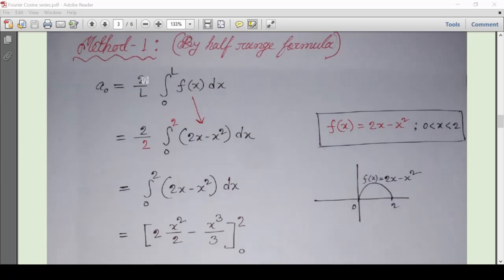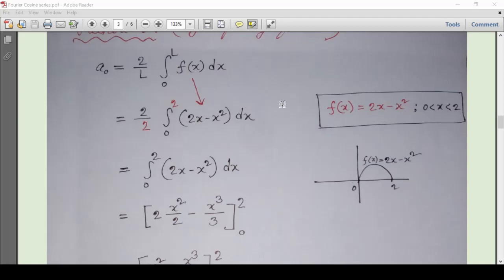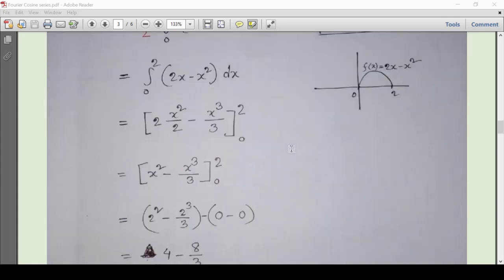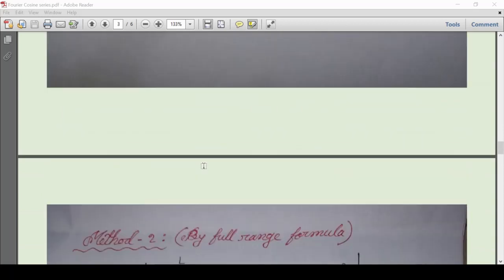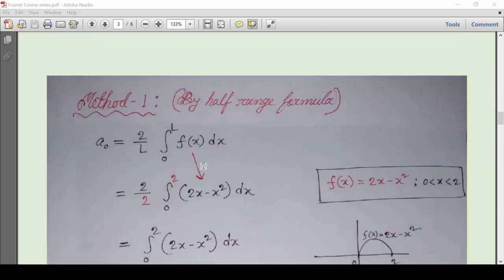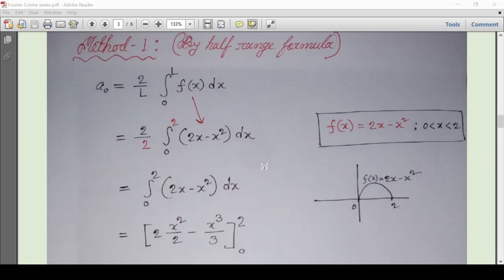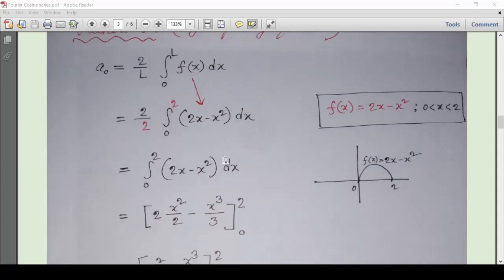So here it is: a_0 = 2/L times the integral from 0 to L of f(x)dx. I have mentioned this part as Method 1, because within some seconds I will show you another method called Method 2. Since the function f(x) is defined from 0 to 2, the value of L will be 2.